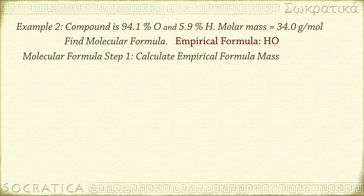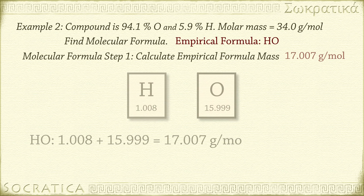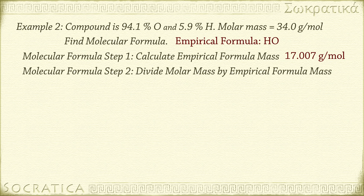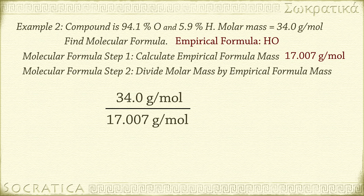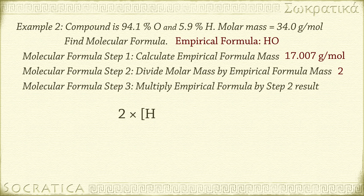Next, we find the empirical formula mass: 1.008 + 15.999 = 17.007 grams per mole. Now we use the molar mass given in the problem: 34.0 g/mol ÷ 17.007 g/mol = 2. In other words, there are two empirical formula units per molecule. So we multiply the empirical formula by 2: 2 × HO = H2O2, hydrogen peroxide.